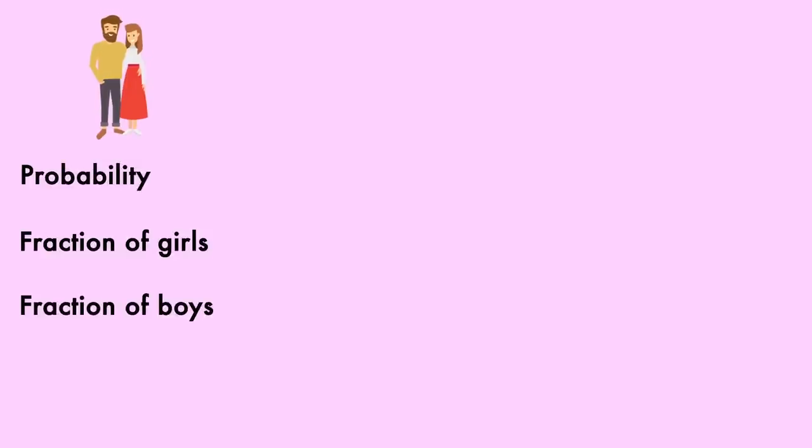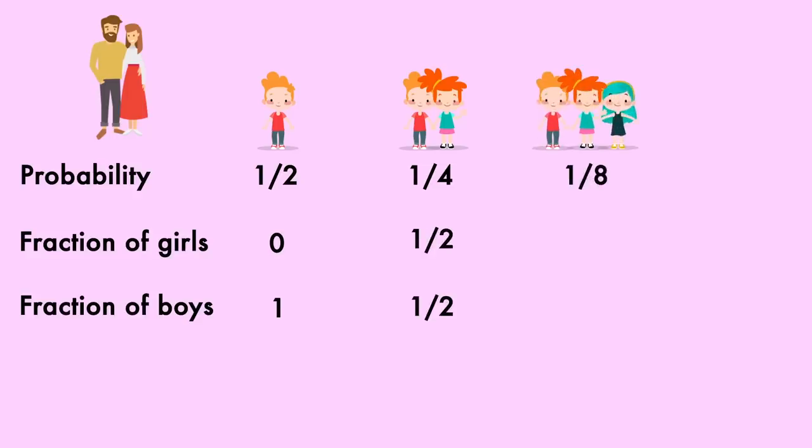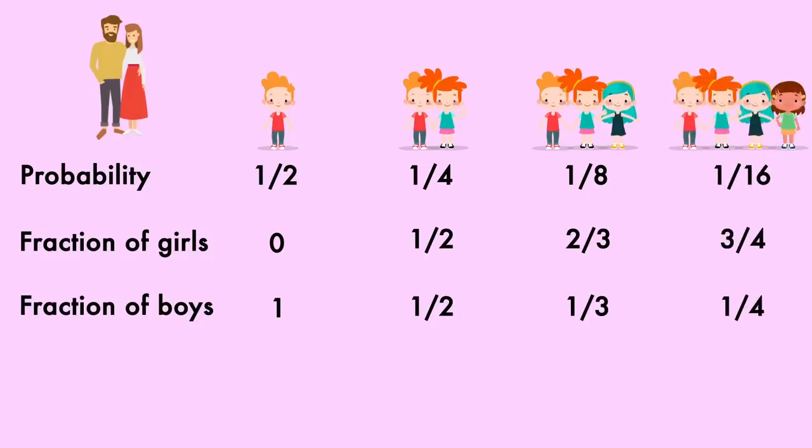Let's assume every village has one couple in it. That means for half the villages, the fraction of girls will be 0, which happens when the first child born is a boy. For one-fourth of the villages, girls will make up one-half of the children, which happens when a girl is born first, followed by a boy. For one-eighth of the villages, girls make up two-thirds of the children, one-sixteenth of the villages will have three-fourths girls, and so on.